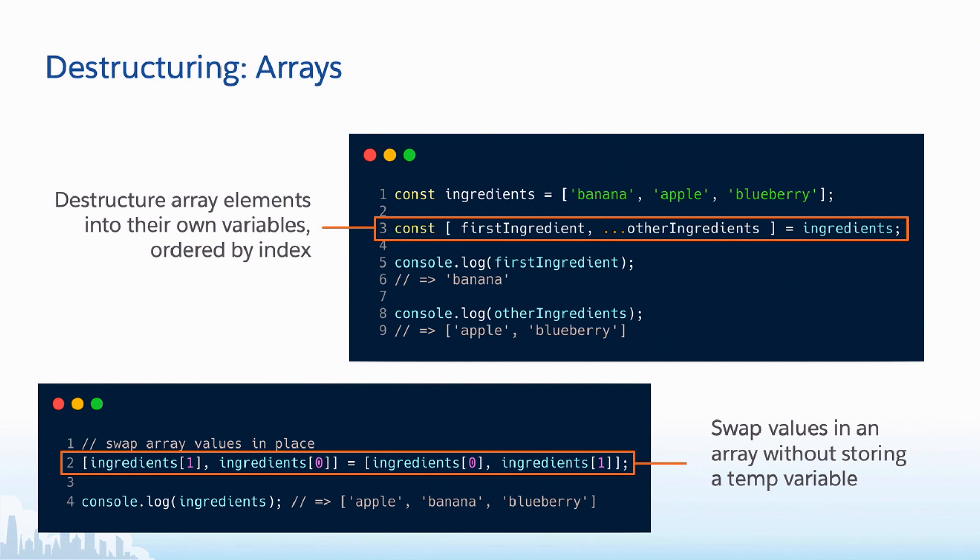This is another thing I like to point out when talking about destructuring. So for anybody that's had to swap array elements in another language, usually you have to create a temp variable, and then you have to do two reassignments, and it can be cumbersome, it's easy to mess up. So with modern JavaScript, we are able to swap values in an array using destructuring. So this is like a one-liner way that you can do this. Just an example. There's a lot of fancy things, but that's one way. And as you can see on line four, when we look at our ingredients, we now have apple, banana, and blueberry, instead of banana, apple, blueberry.